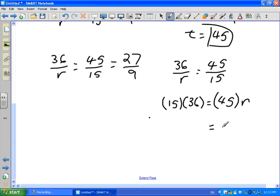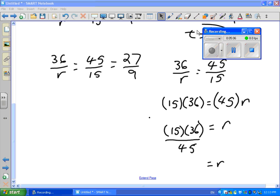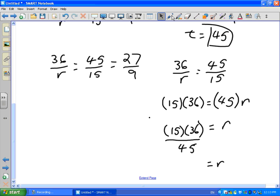And then, to isolate R, I divide both sides by 45. So, this will look like this, 15 times 36 divided by 45. That will give you our value of R. Want to help me out with what that is? So, it ends up being 12.